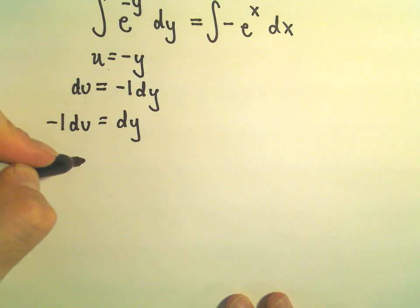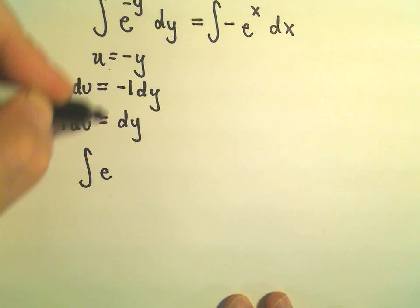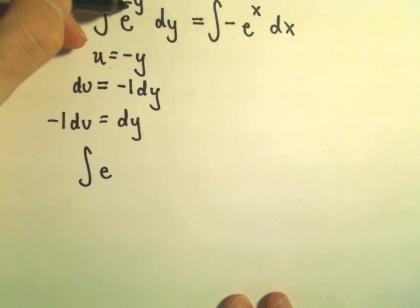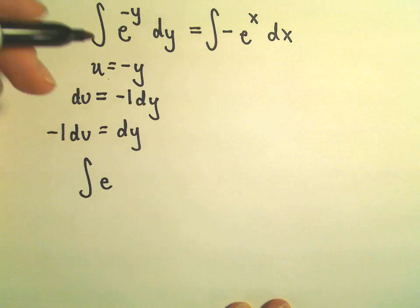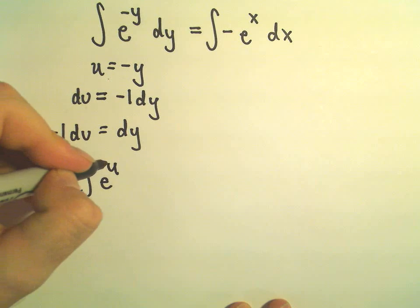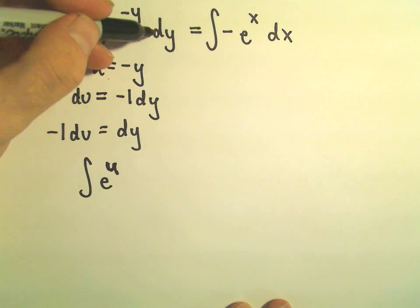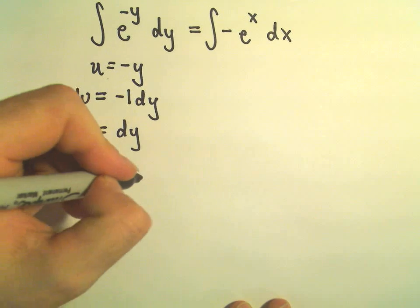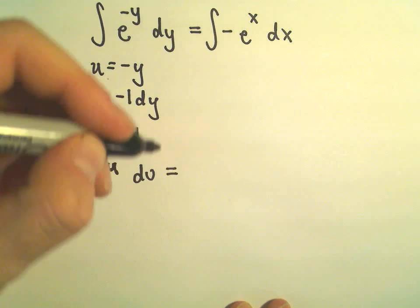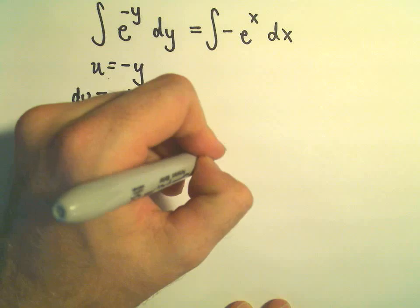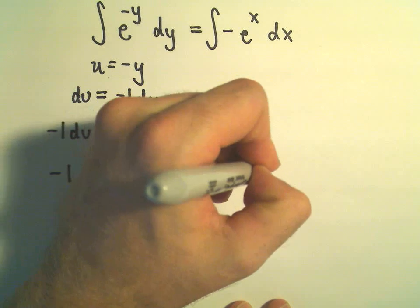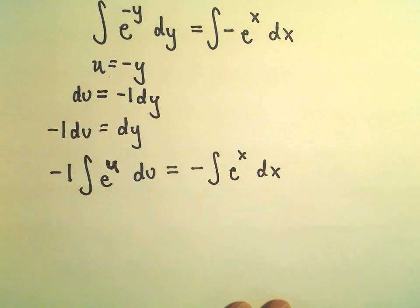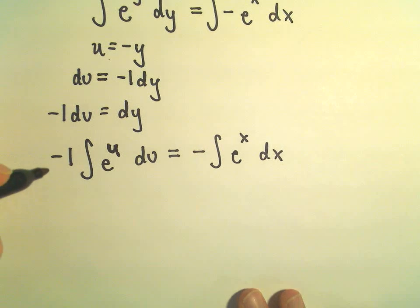So if we rewrite this, we would have e to the u, because we're replacing negative y here with u. dy is being replaced with negative 1 du, so I'm going to pull the negative out front. I'm going to do the same thing on the right. I'm just going to pull the negative out front.